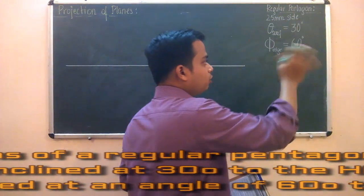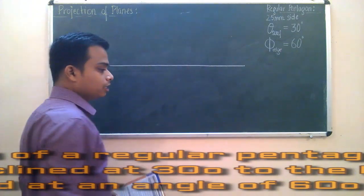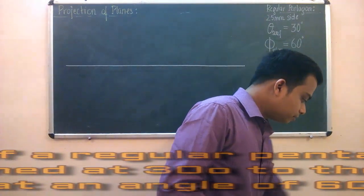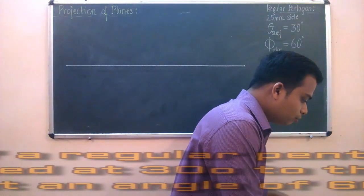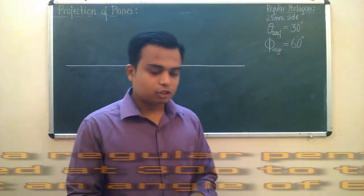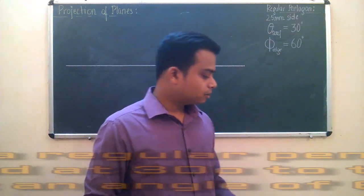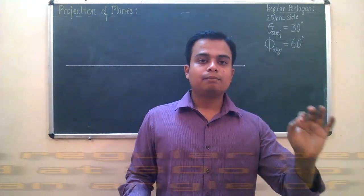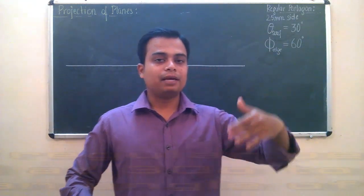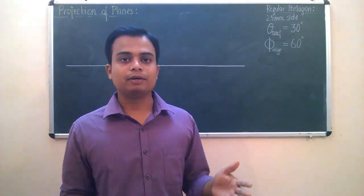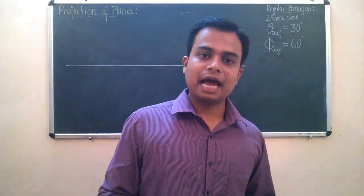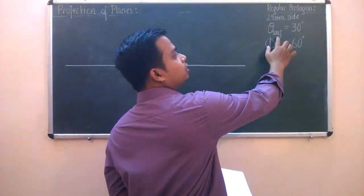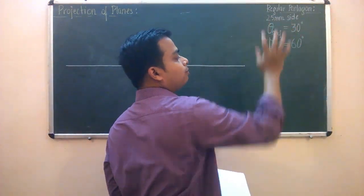All these things have to be incorporated and must reflect in the problem we will solve. For any problem on projection of planes, always try to find out with which principal plane — whether it is HP or VP — the surface of this object is making an angle. As far as this particular question is concerned, we know the surface is making an angle of 30 degrees with the horizontal plane.